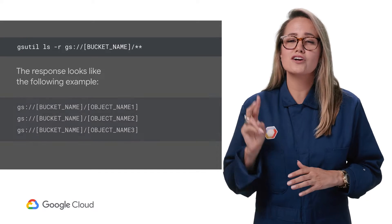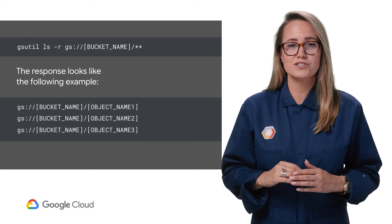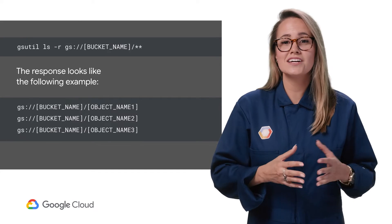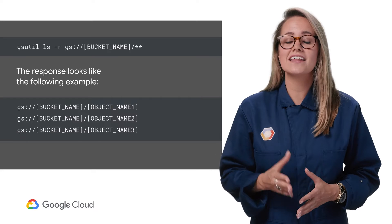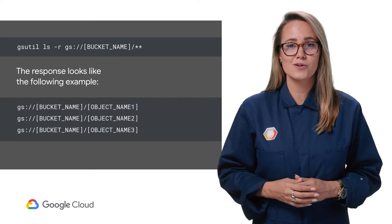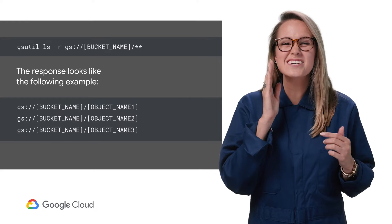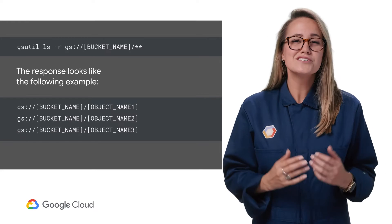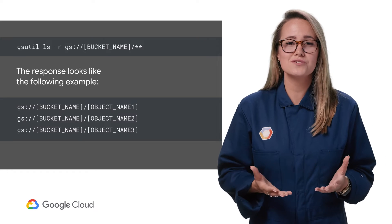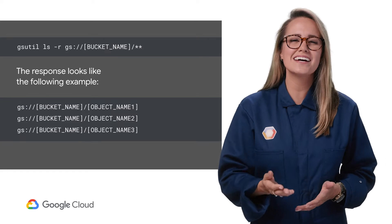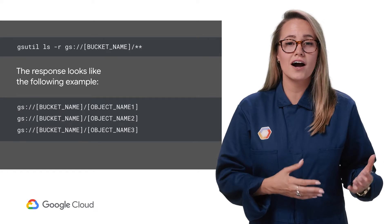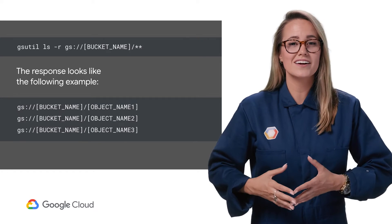As we talked about when getting data in, there are two main options for interacting with your Cloud Storage: command line gsutil and the Cloud Console. This is going to be true for a while. So listing the contents of a bucket with gsutil, you'll get a nice structured response, making it easy to see what you've got and where.